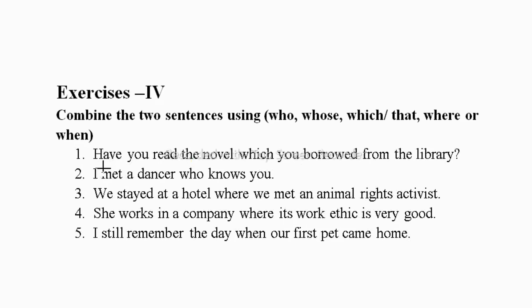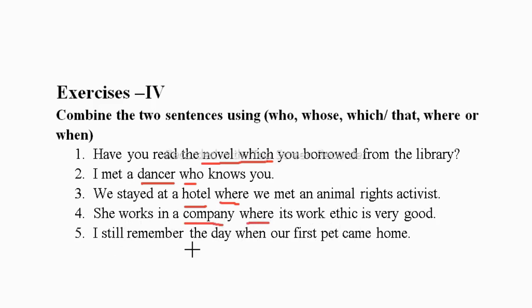Here are the answers. Met a dancer who knows you — dancer is a person so we take 'who'. We stayed at a hotel where we met an animal rights activist — hotel is a place so we take 'where'. She works in a company where its work ethics is very good — company is a place so we take 'where'. I still remember the day when our first pet came home — day is a time reference so we take 'when'.